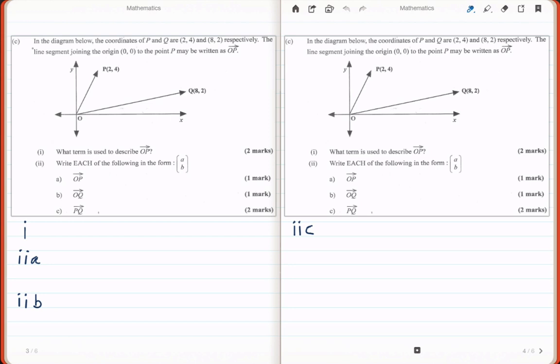And the first question is, what term is used to describe OP? Now in both Physics and Mathematics, if you have a quantity that has an arrow on top, it usually signifies that this quantity is a vector.